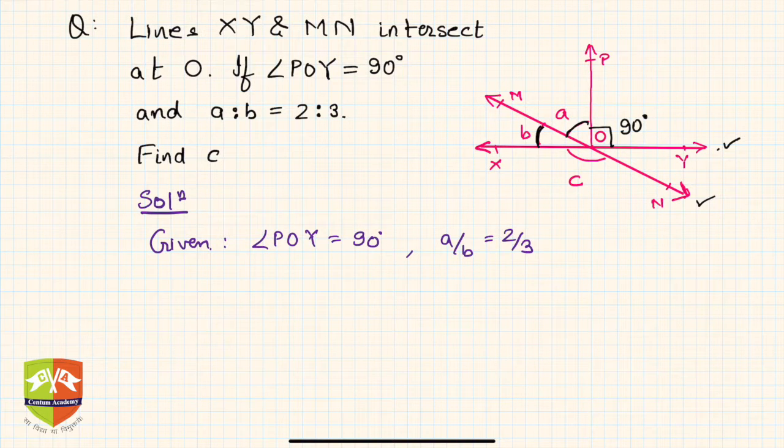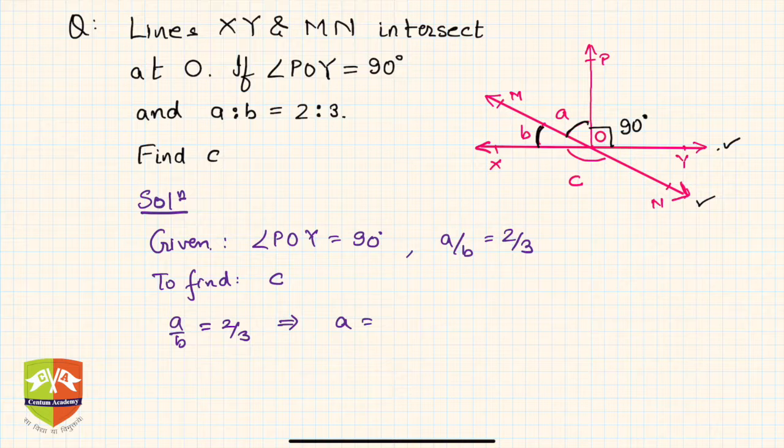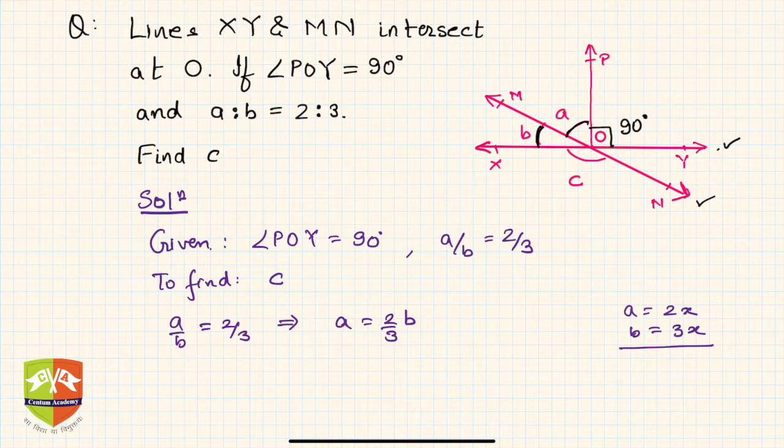You have to find c. Now a/b is equal to 2/3, this implies a is equal to 2/3 times b. Many people start with calling a as 2x and b as 3x and then solving. You can do that, but I use this method because it saves me another variable.